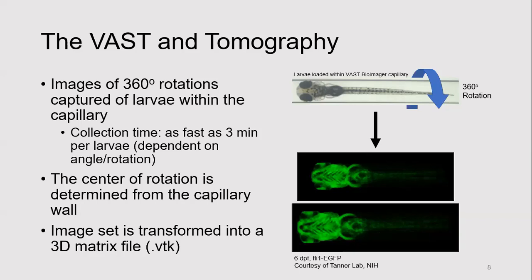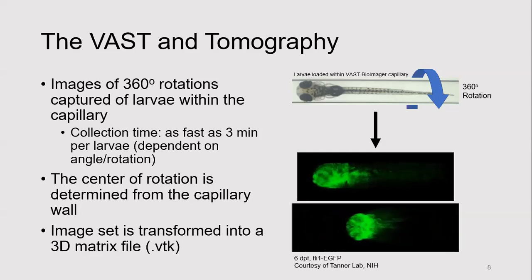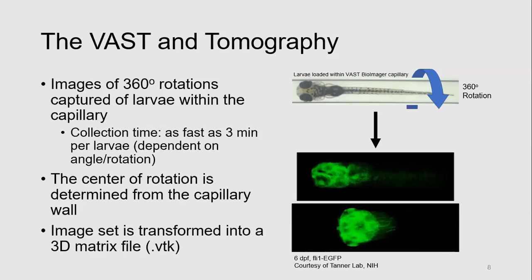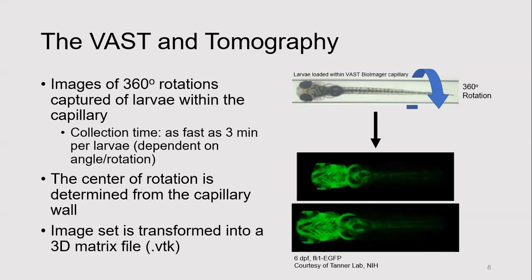Once all radial sections are collected, they are processed — a key step being determining the center of rotation from the capillary wall. The output is a VTK file, which enables manipulation of these volume renderings in free space. An example shown is a fli1 EGFP line with EGFP expressed in the vasculature.